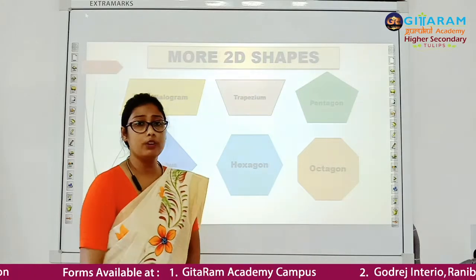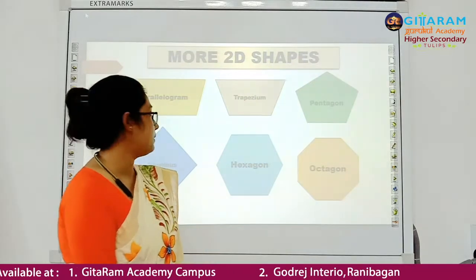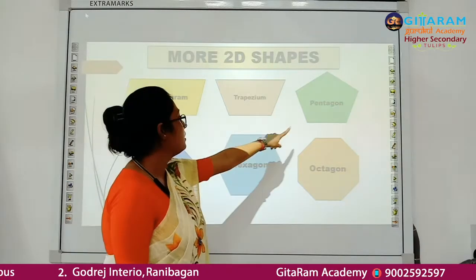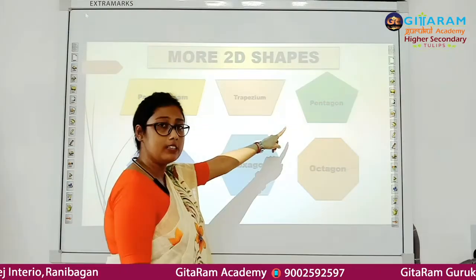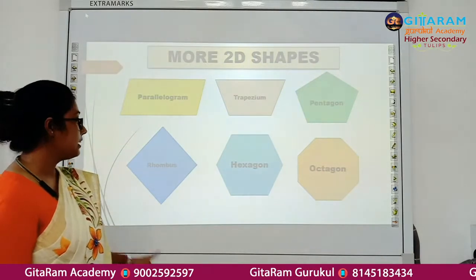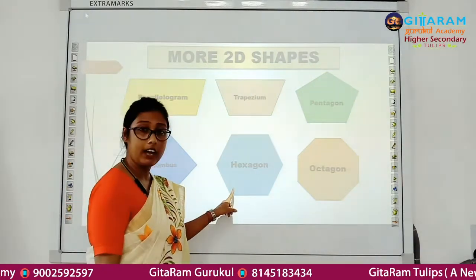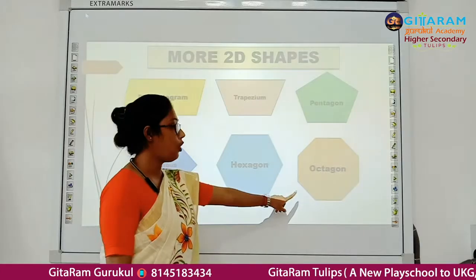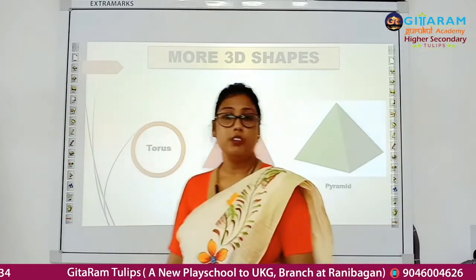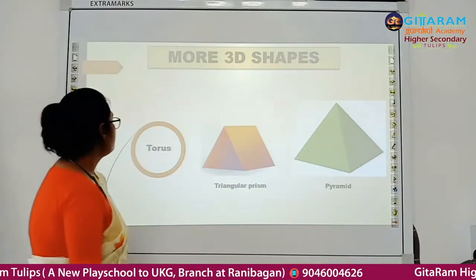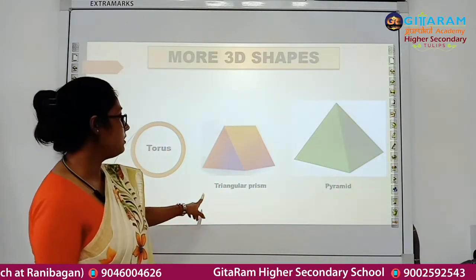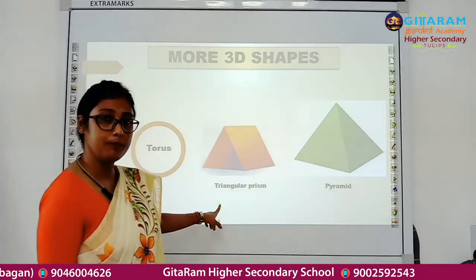Let us look at some more examples of 2D shapes: parallelogram, trapezium, pentagon — pentagon has 5 sides — rhombus, hexagon — hexagon has 6 sides — and octagon — octagon has 8 sides. Here are some more examples of 3D shapes: torus, triangular prism, and pyramid.